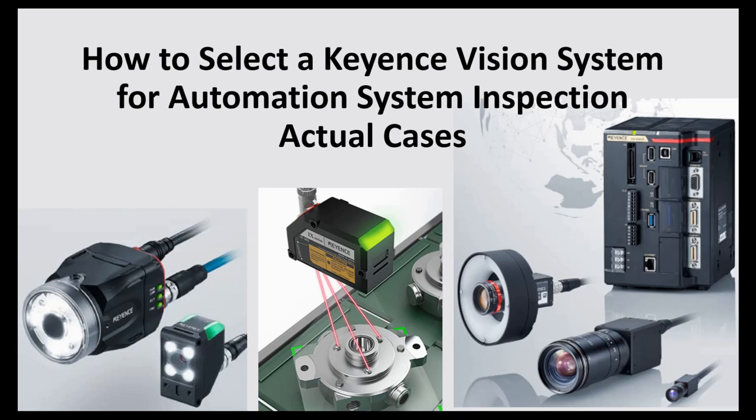If you are learning about Keyence for the first time, you can go to the Keyence website and check out or download their catalog to learn the basic ideas. Keyence's typical sales style is that they assign one sales representative to your area. Once you contact them, the rep will visit your plant or machine and work together with you to select a feasible vision system or camera sensor to match your requirements.